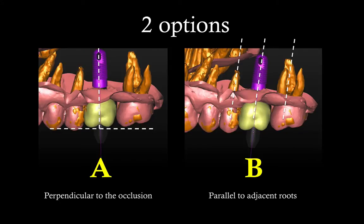If you didn't see it, go back and watch it so you can understand what the exact dilemma was all about. I showed a very simple case where you have abundance of bone, enough space between the roots, and enough space to the sinus to place an implant with quite a bit of leeway. What I was exploring was: should the implant be placed perpendicular to the occlusal plane, or should it be parallel to the roots? And it may not be as simple as you think.